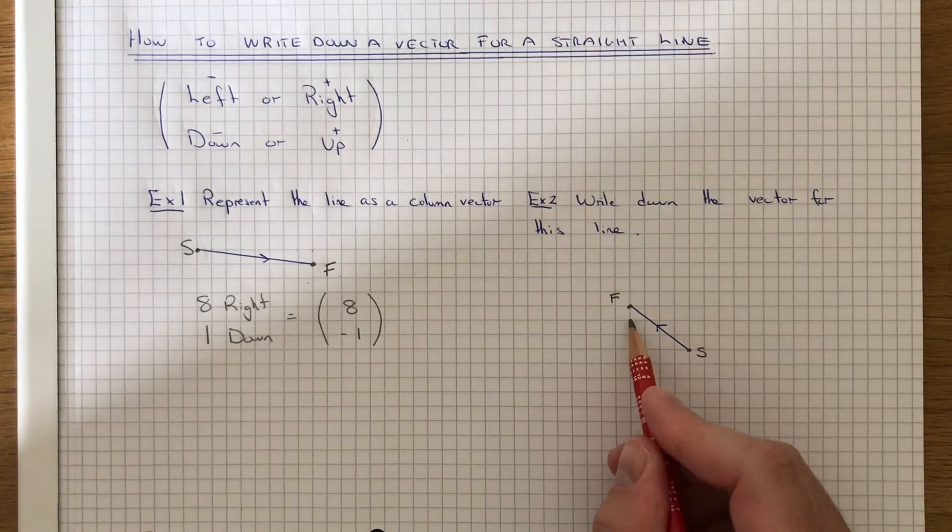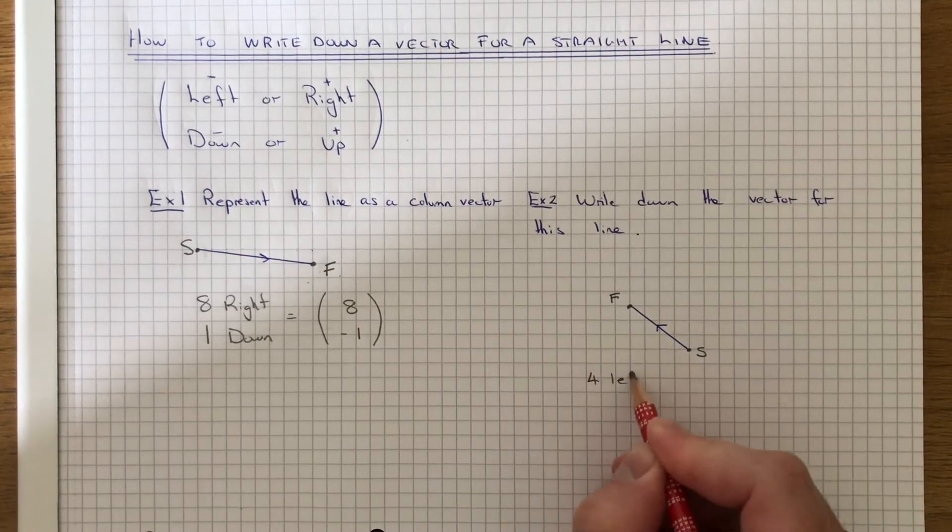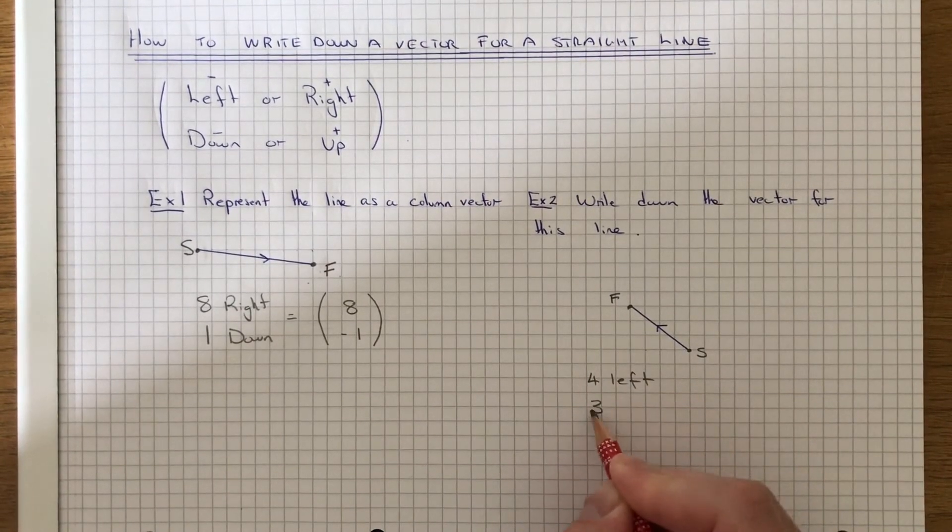And then 1, 2, 3. 3 squares up. So it's 4 left and 3 up.